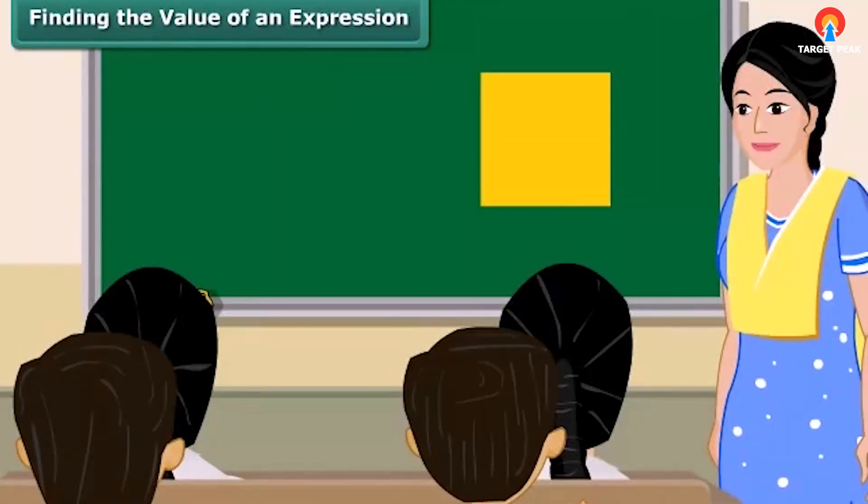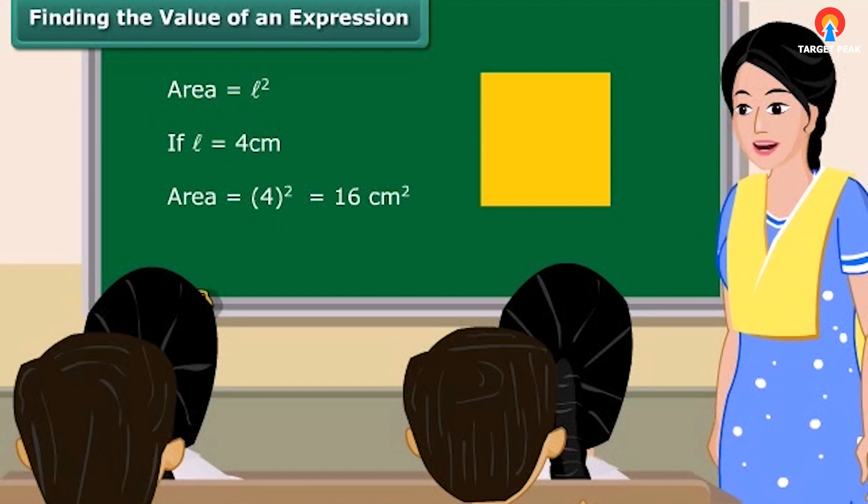See this square. It has an area equal to L squared. If the value of L is equal to 4 cm, then what would be the area of this square? That's right, it would be 16 cm squared. So, children, there are a number of situations in which we need to find the value of an expression.